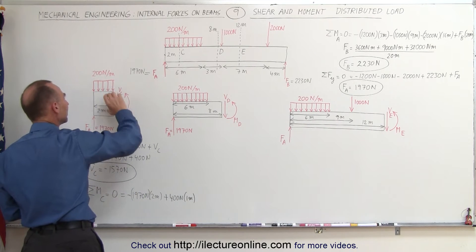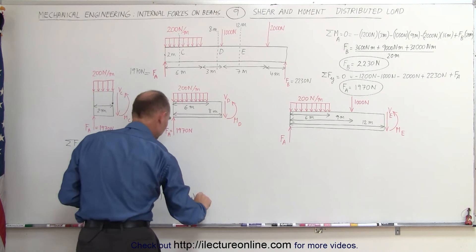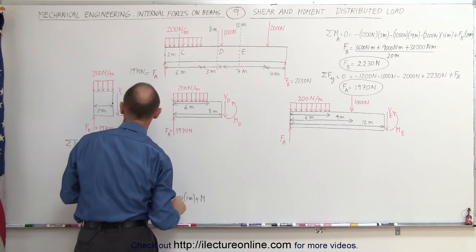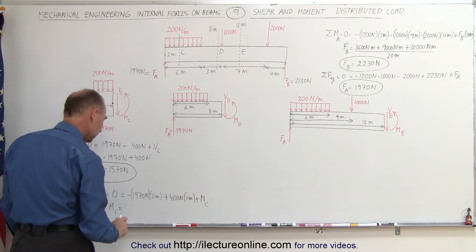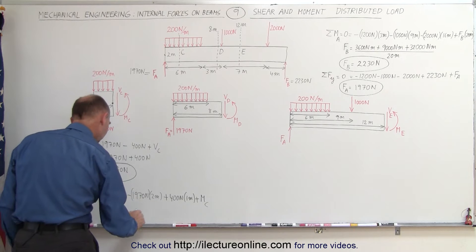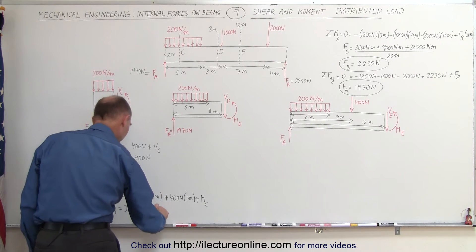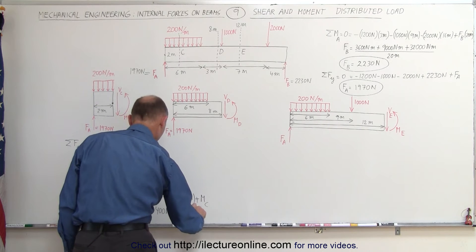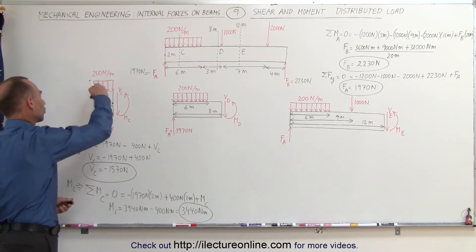We also have the internal moment caused by the beam counteracting the external forces. It's acting in a counterclockwise direction, which is positive, so plus M sub C. Solving for M sub C: bringing terms to the other side gives 1970 times 2 = 3940 N·m, minus 400 N·m, which equals 3440 N·m. That's the internal moment at C counteracting the external forces.